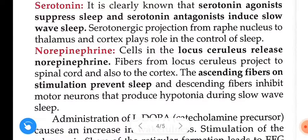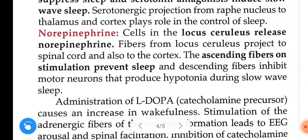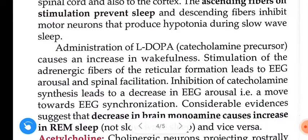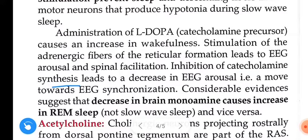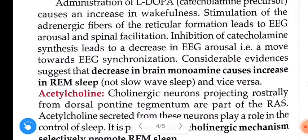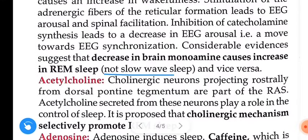Norepinephrine: cells in the locus ceruleus release norepinephrine; fibers from the locus ceruleus project to the spinal cord and to the cortex. The ascending fibers, on stimulation, prevent sleep, and descending fibers inhibit motor neurons that produce hypotonia during slow wave sleep. Administration of L-dopa, a catecholamine precursor, causes an increase in wakefulness. Stimulation of adrenergic fibers of the reticular formation leads to EEG arousal and spinal facilitation, while inhibition of catecholamine synthesis leads to EEG synchronization. Decrease in brain monoamines causes increase in REM sleep, not slow wave sleep, and vice versa.